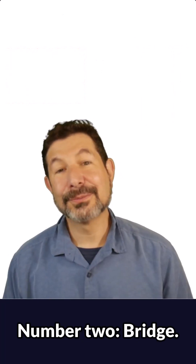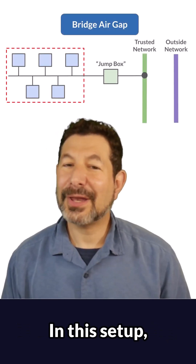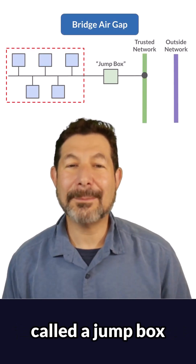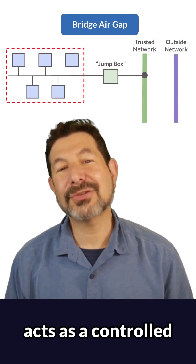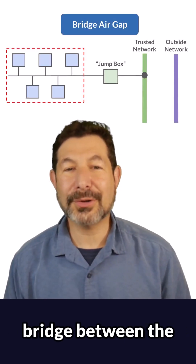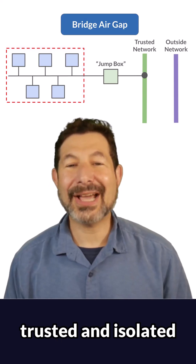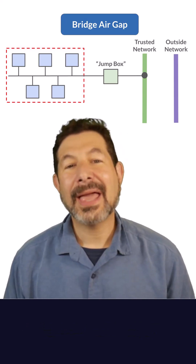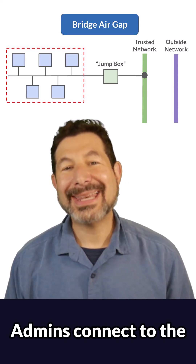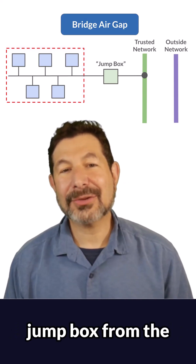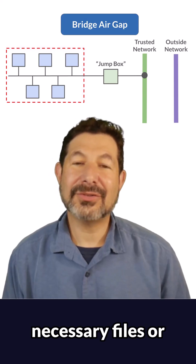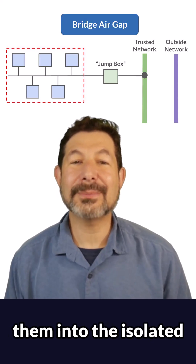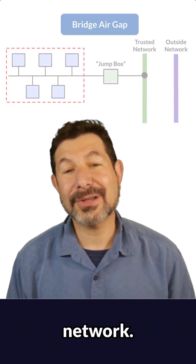Number two: bridge. In this setup, an intermediate server called a jump box acts as a controlled bridge between the trusted and isolated infrastructure. Admins connect to the jump box from the trusted side, fetch necessary files or updates, and then push them into the isolated network.